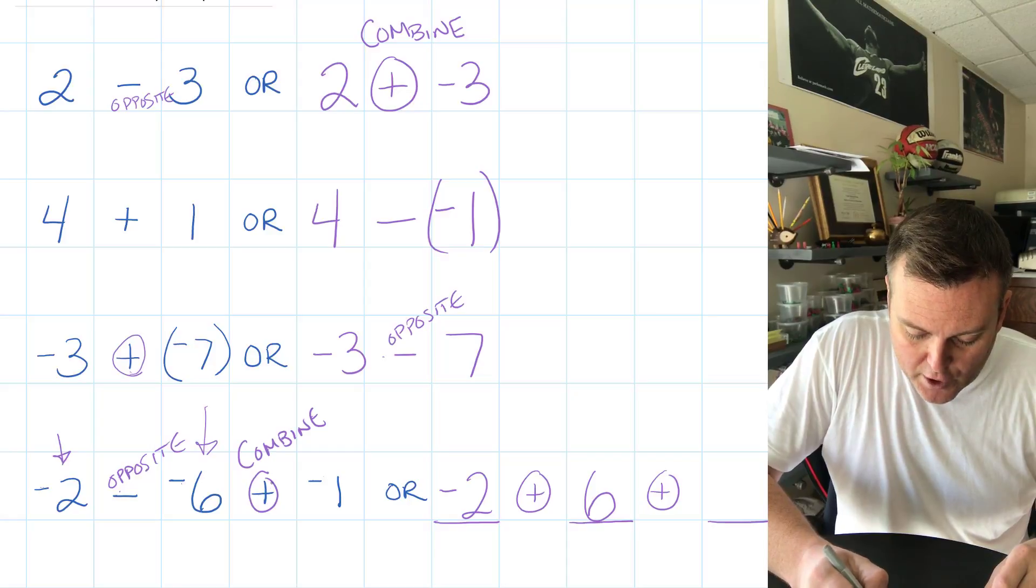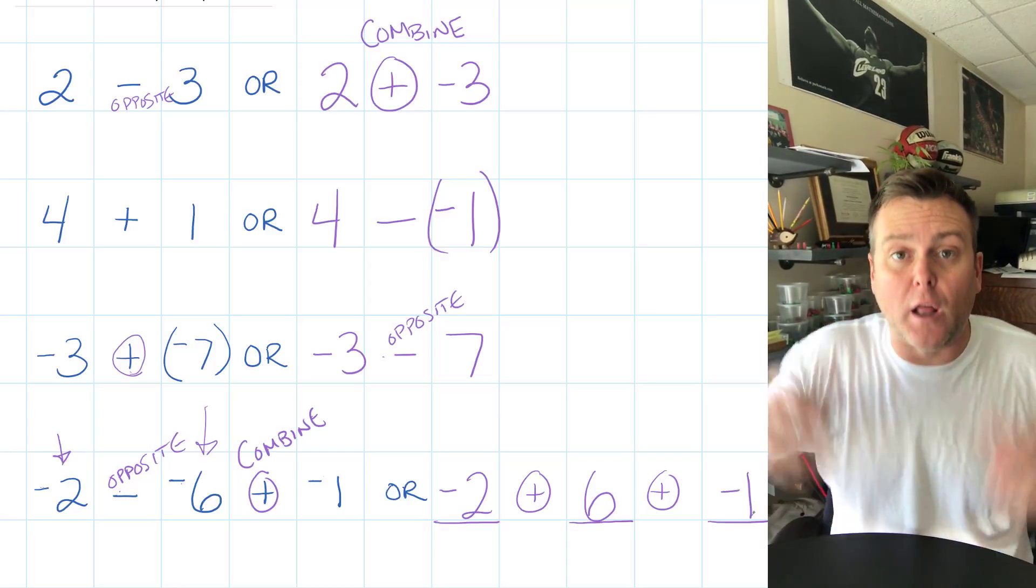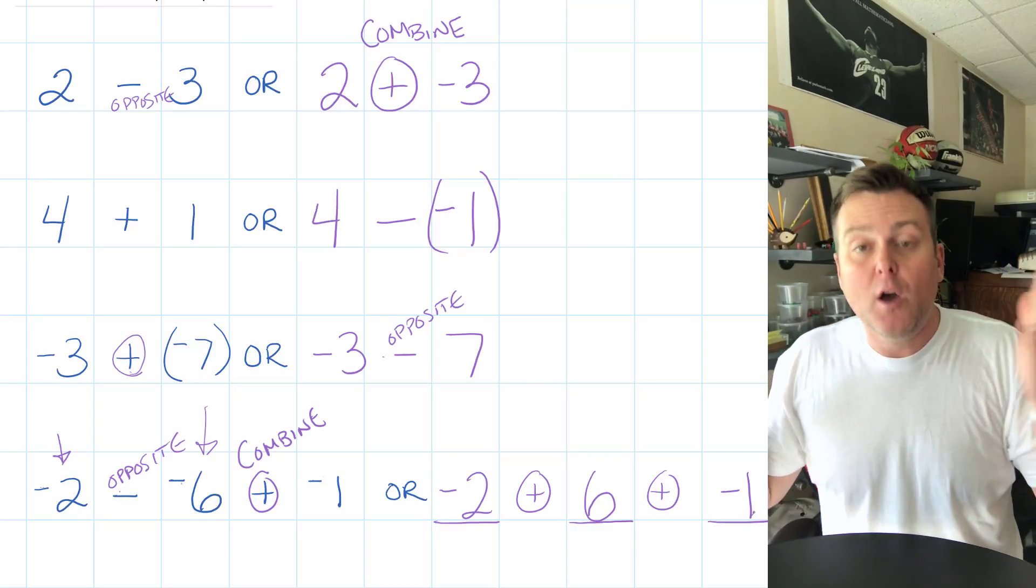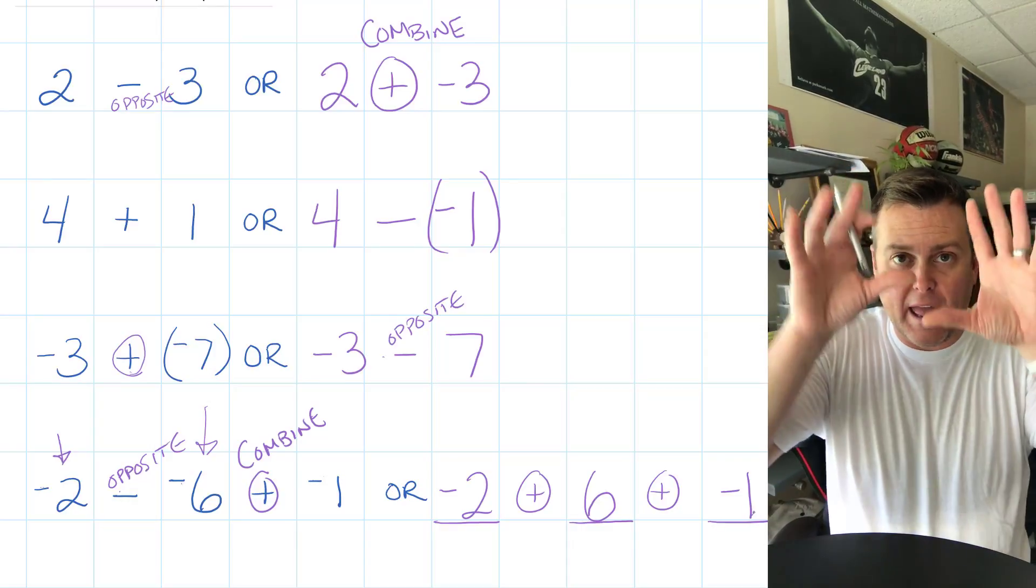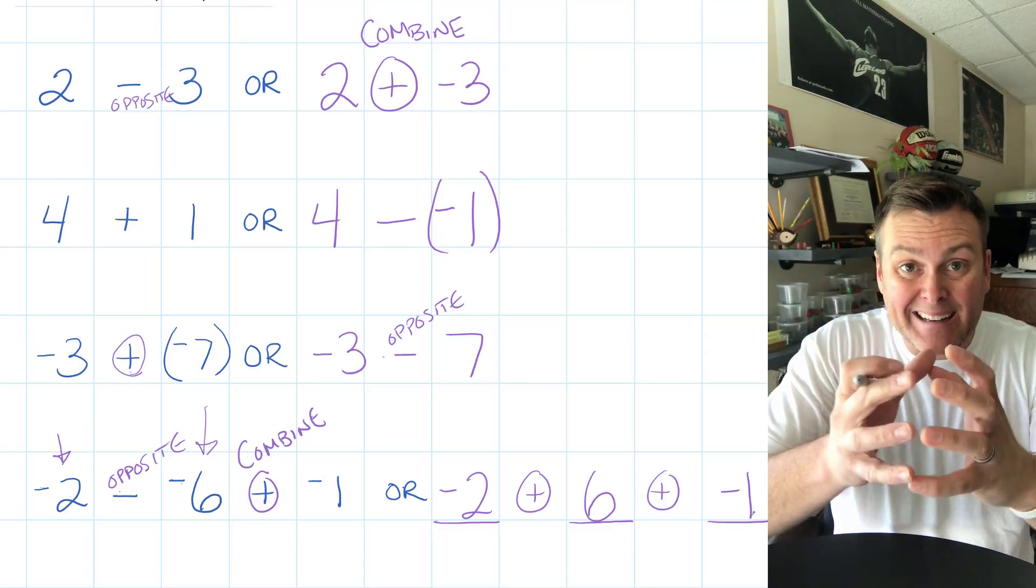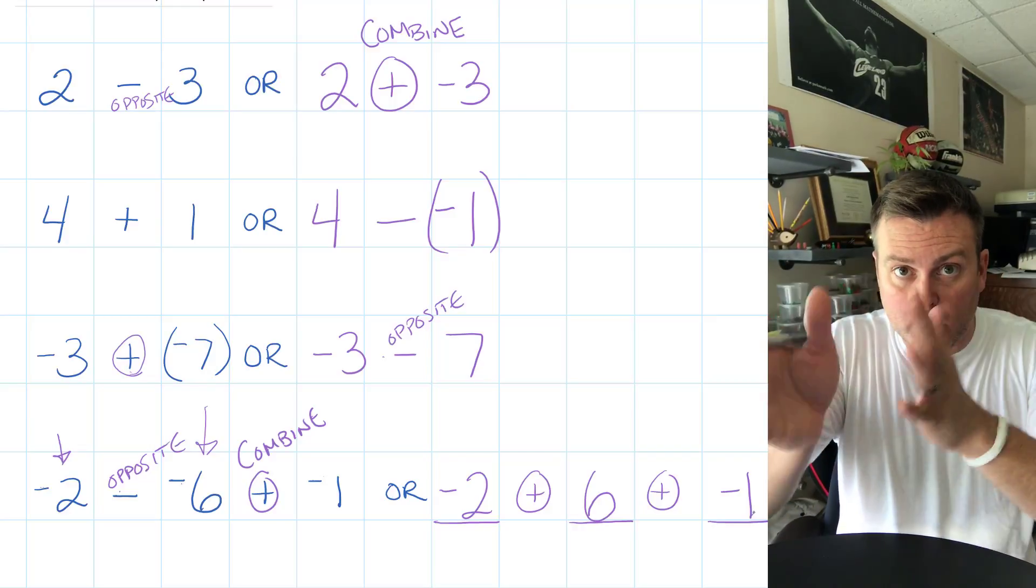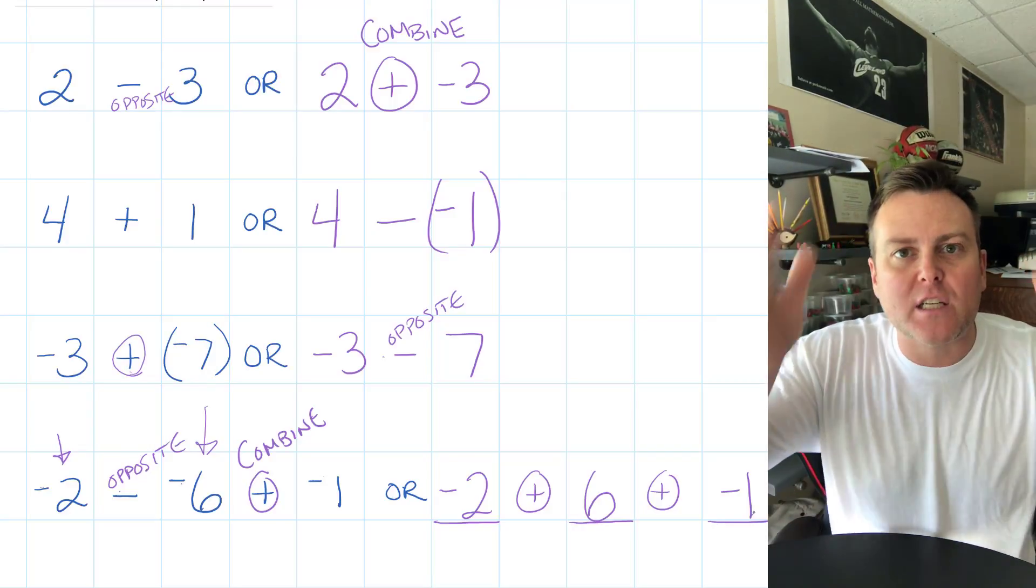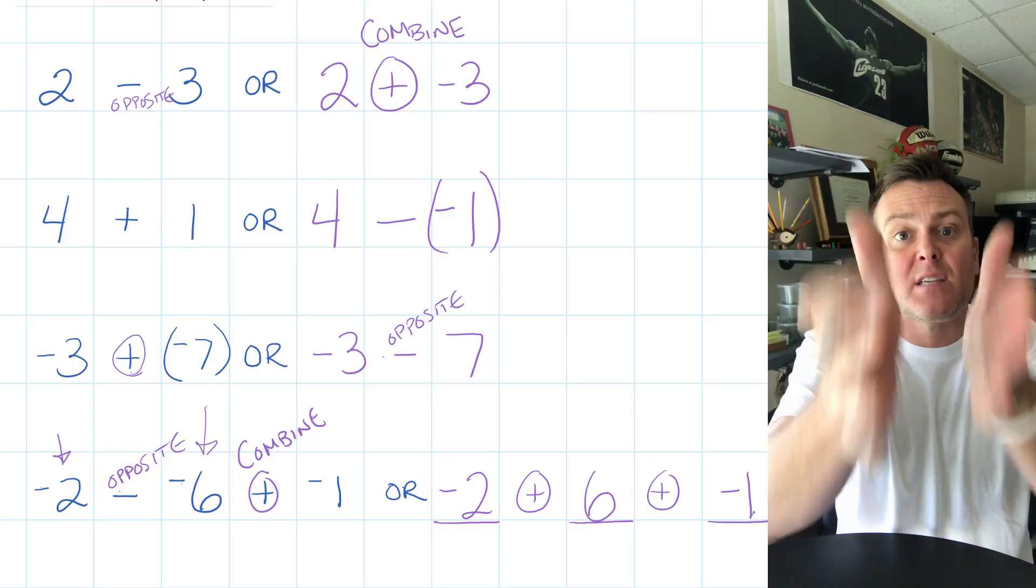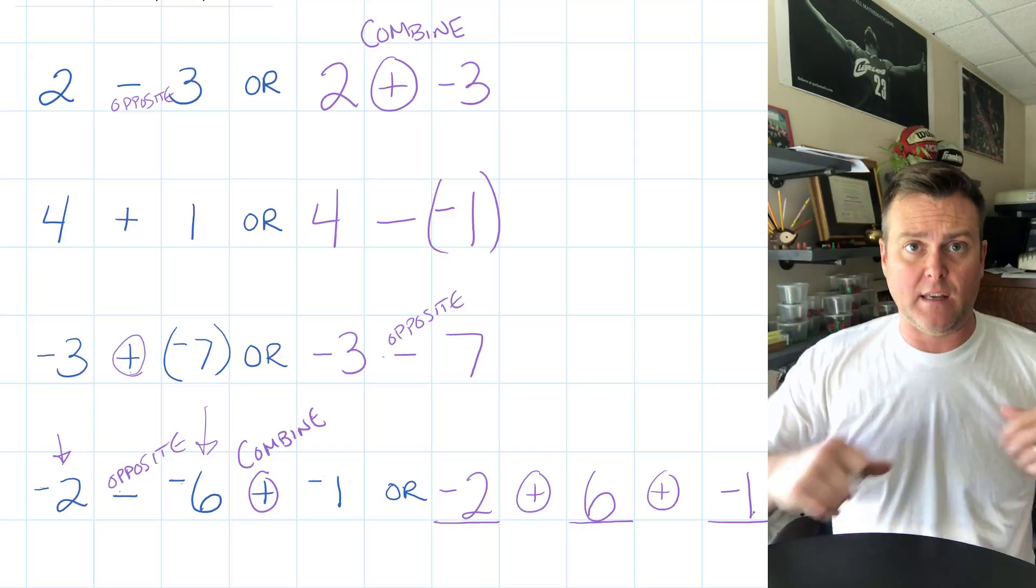I know that I want three numbers – one, two, three – I want them combined together. Are they positive? Are they negative? Let's figure that out. First number: it's a negative two, nothing changes, fine. Second number: I want the opposite of -6, positive six. Last one: we're going to combine -1, so that doesn't change at all. And now I have something written out where I have my combining addition sign in between the numbers, and what that does, it lets you clearly see whether the number is positive or whether the number is negative.